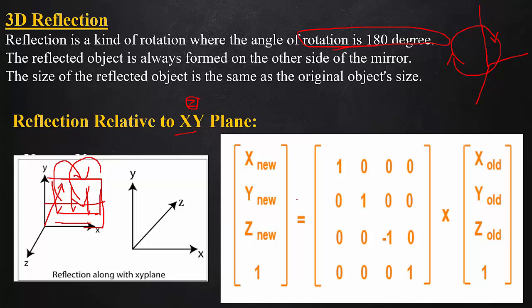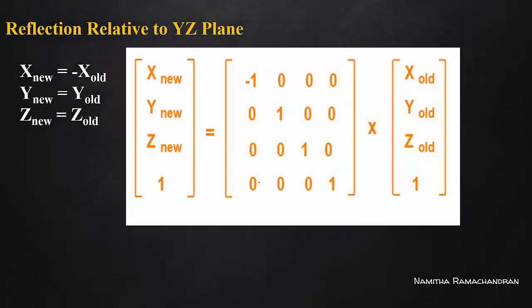Let's take a homogeneous representation. x_new is x itself, y_new is y itself, and z_new is minus z. That is: 0 plus 0 plus minus 1 into z gives minus z. This is how we consider the x-y plane based reflection matrix.